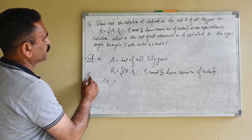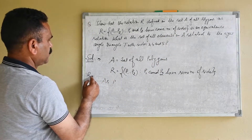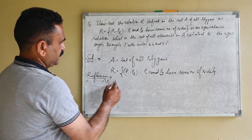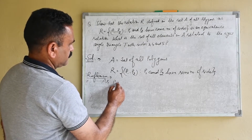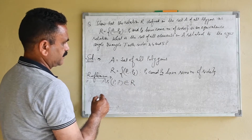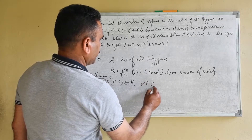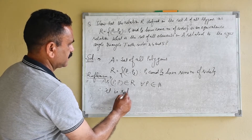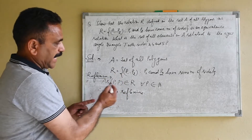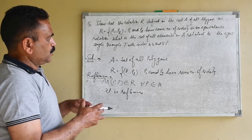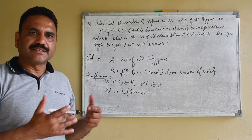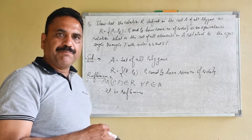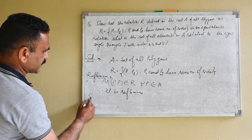We have to prove that this is an equivalence relation. First, we show it is reflexive. For all P belonging to A, we can say P belongs to R (i.e., (P, P) belongs to R). Any polygon — whether having 4, 5, or 6 sides — will have an equal number of sides to itself. Every polygon is the image of itself. Therefore, it is reflexive.